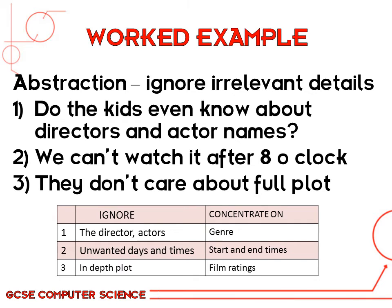For a worked example of abstraction, we need to ignore all the irrelevant information. Do the kids even know about directors and actors' names? They might recognise the odd actor, but they're unlikely to know all the different film directors or really care about who's making the film — so that's one thing we can ignore. We can't watch after eight o'clock, so we need to focus on the film start and end times. And they don't need to look at the full plot of every single film — that would take all day. So you could focus on the film ratings instead. The table shown highlights which information we can ignore and which we should concentrate on: we ignore the director and actors, and focus just on the genre.